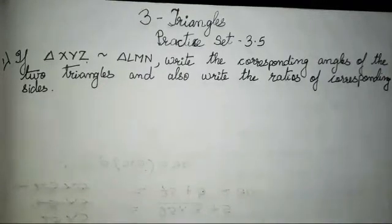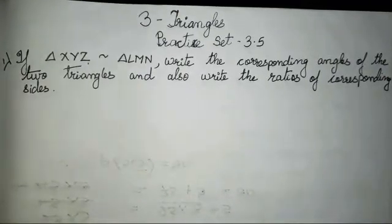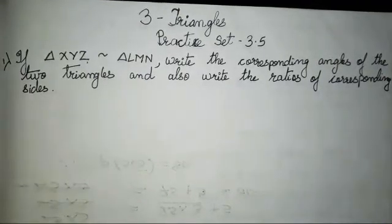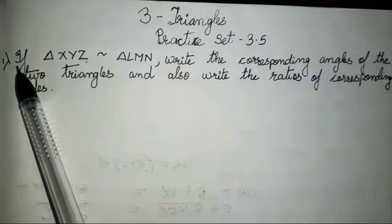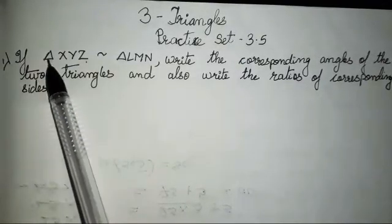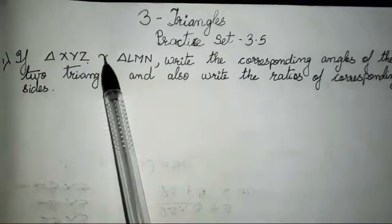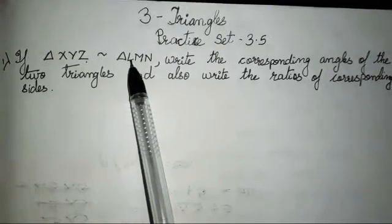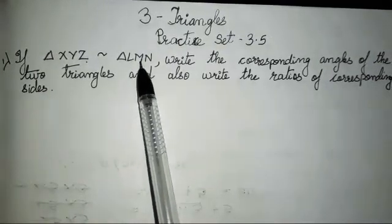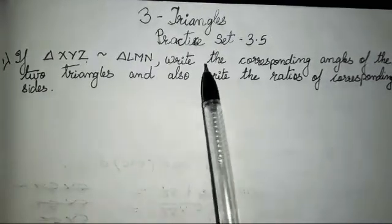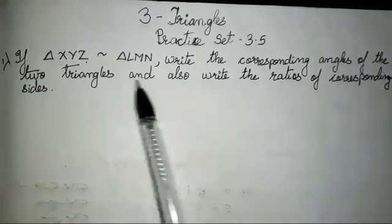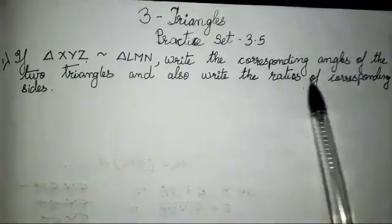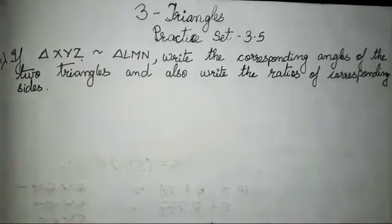Hello everyone, today we are going to study chapter number 3, triangle practice set 3.5, we are going to complete in today's video. Now in this question, if triangle XYZ is similar to triangle LMN, write the corresponding angles of the two triangles and also the ratio of their corresponding sides.